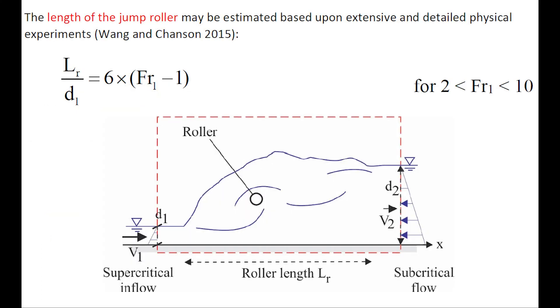The length of the roller may be estimated based upon extensive and detailed physical experiments, as LR over d1 equals 6 times the upstream Froude number minus 1.